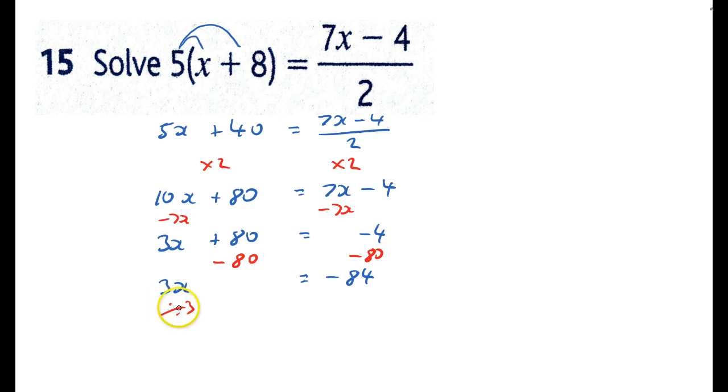And obviously I now need to divide by 3, divide that by 3, and that will give me that 1x equals negative 28 and that's 15 done.